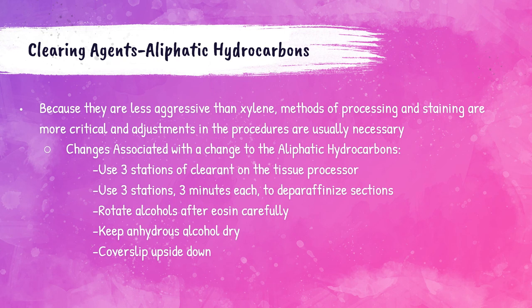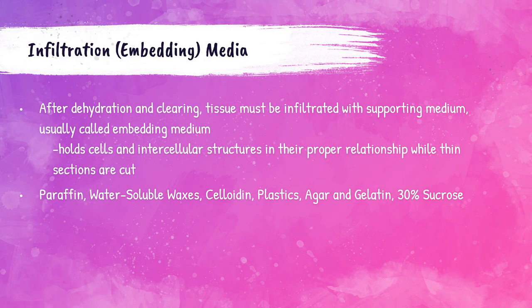Aliphatic hydrocarbons are less aggressive than xylene and their processing methods are more critical. Three stations of clearing agent on the tissue processor must be used — three stations at three minutes each — to deparaffinize tissue sections. Alcohols and eosin must be rotated carefully, the anhydrous alcohol must be kept dry, and the mounting medium must be applied to the coverslip and lowered down at an angle over the coverslip.